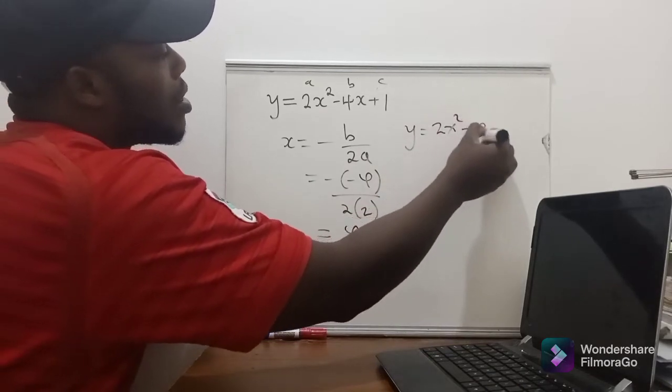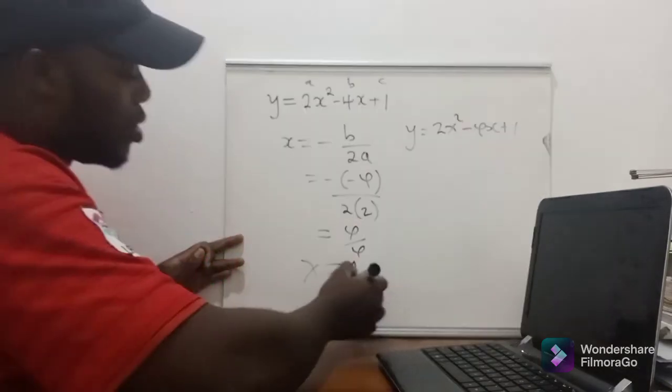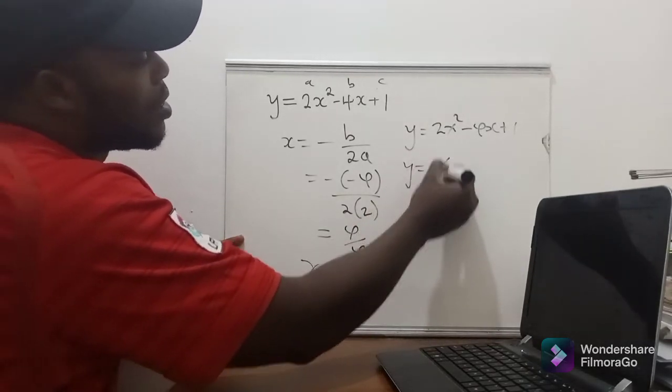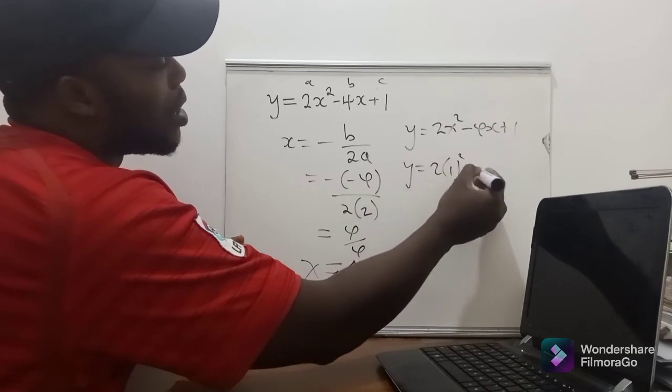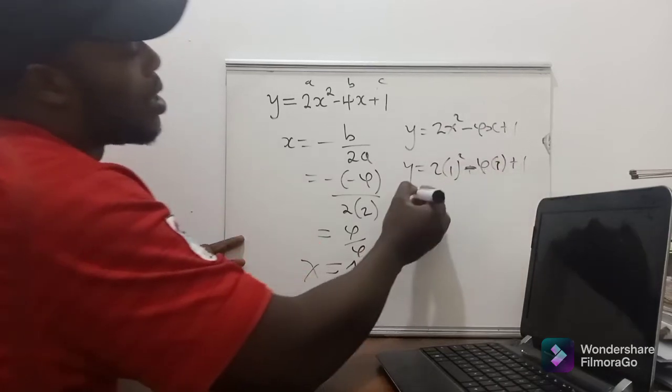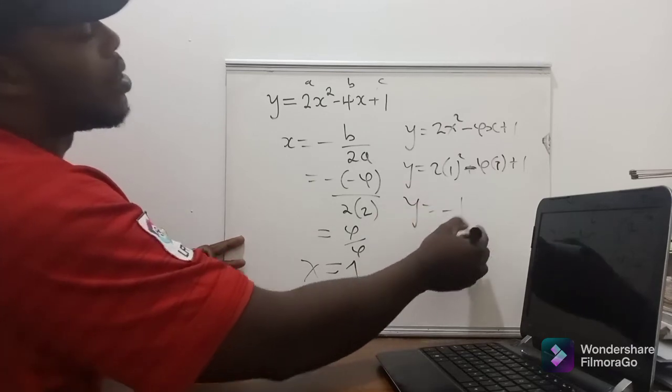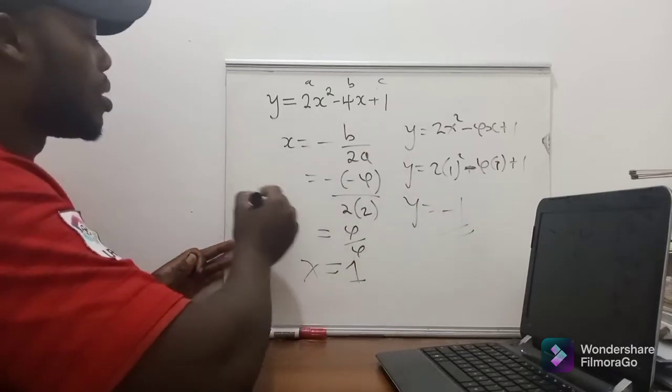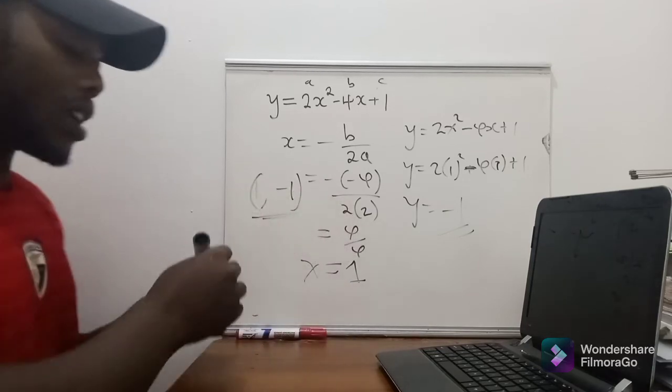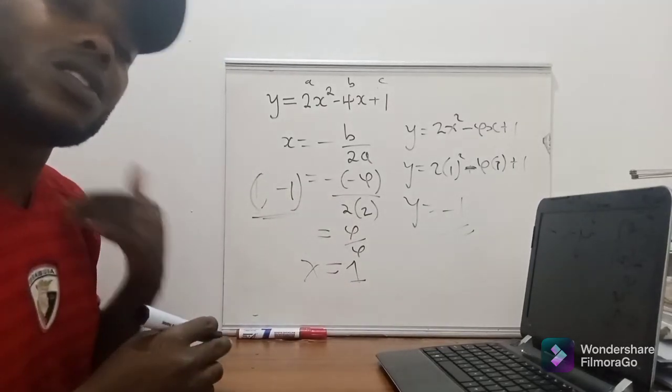It's like this, we replace this x with 1, like we just did when finding the y value. So it will just be like this over here, such that when we solve we get negative 1. So our turning point will be 1 comma negative 1.